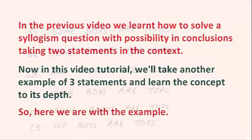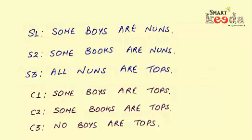So here we are with the example. In this example, three statements are given as S1 which is some boys are nuns, S2 which is some books are nuns, and S3 which is all nuns are tops. And three conclusions are given as C1 some boys are tops, C2 some books are tops, and C3 no boys are tops.